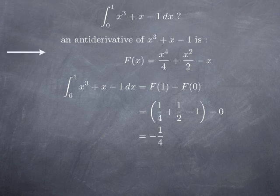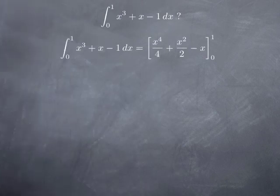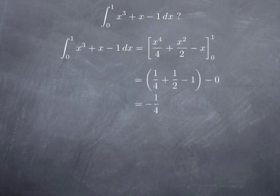You see it was a little cumbersome to introduce a separate symbol for the antiderivative. This is where our notational device comes in: instead of naming the antiderivative, we write it directly between brackets with the bounds of integration on the right-hand side. So for x³ + x − 1, the antiderivative is x⁴/4 + x²/2 − x, written between brackets evaluated from 0 to 1. Then we plug in: the value at 1 is 1/4 + 1/2 − 1, minus the value at 0, which is 0.